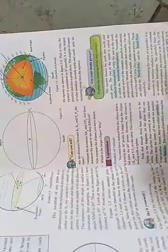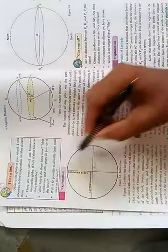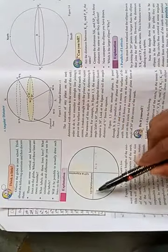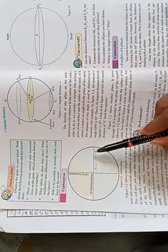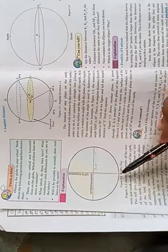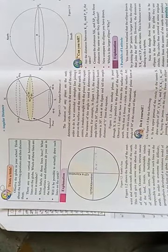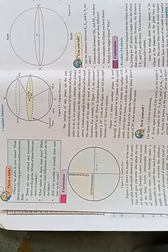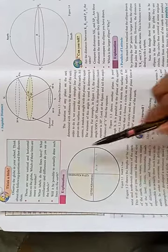That is why it becomes necessary to find a new system to state the precise location of any place on the earth. Now, in the next diagram, with the help of this figure, it shows the length of the east-west and north-south diameter of the earth. This will give you some idea about the size of the earth.